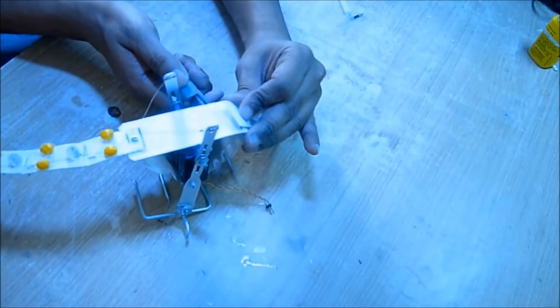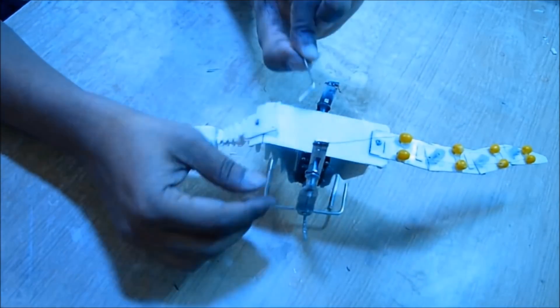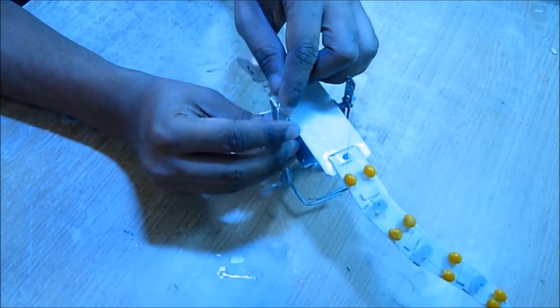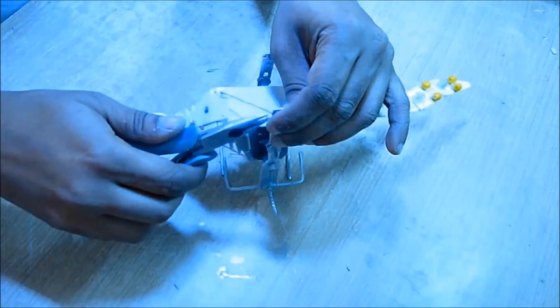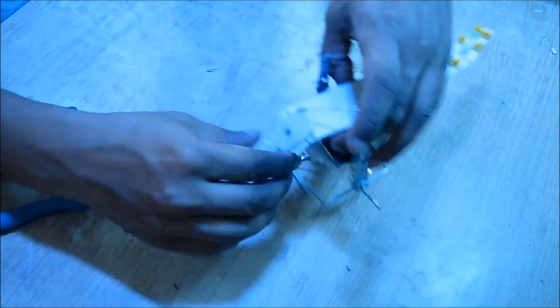This pin joint should move freely. Now at one end make a hole and using a safety pin wire connect it with another top part of the leg. Now if the leg is moving, you can see the neck is moving left and right.